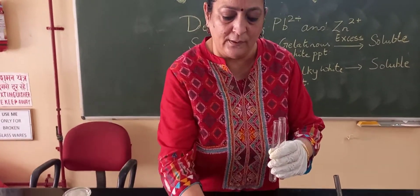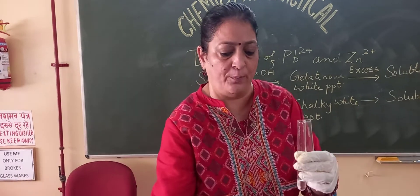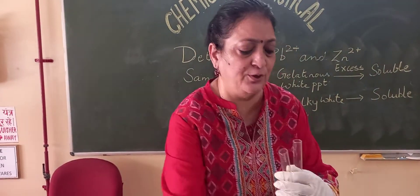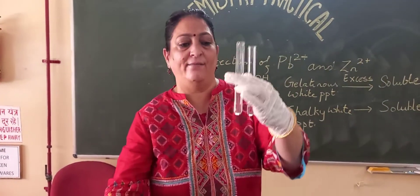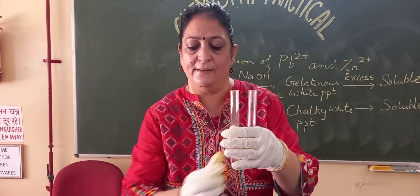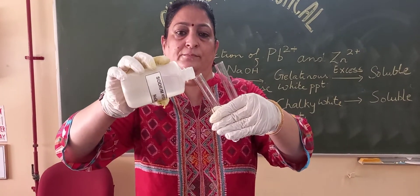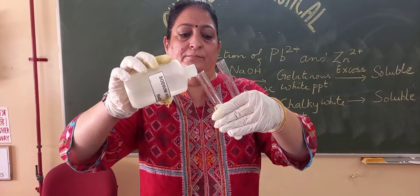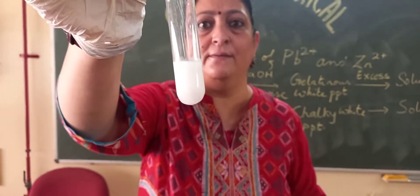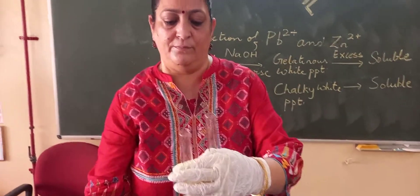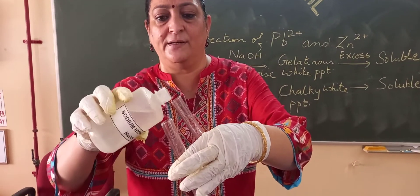Now let me show you the demo. This is a water-soluble salt of lead. My right-side test tube is having the lead component and the other test tube is having zinc. I add NaOH first drop by drop. This is the chalky white precipitate that you get with lead ions. Now the second sample is our zinc cation sample — this is our gelatinous white precipitate.